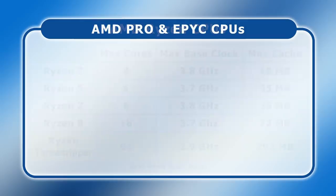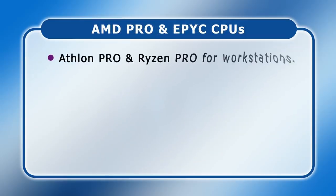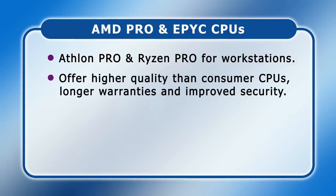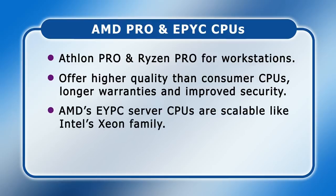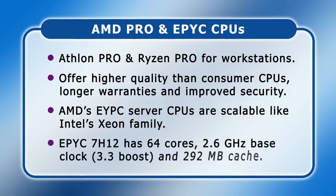Next in the AMD lineup, we find the Athlon Pro and Ryzen Pro for business workstations. These have very similar specifications to their consumer counterparts, but offer higher production quality with longer warranties and improved security. Finally, AMD sells its EPYC family of server CPUs, which are scalable like Intel's competing Xeon chips, with the top-of-the-range EPYC 7H12 boasting 64 cores, a 2.6 GHz base clock boosting to 3.3 GHz, and a combined 292 MB of cache.